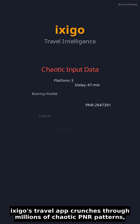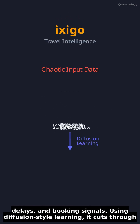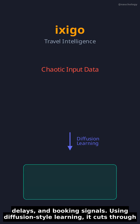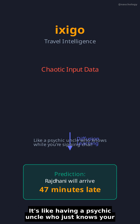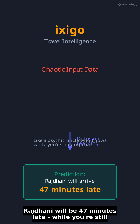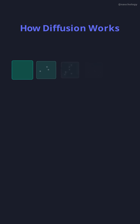Ixigo's travel app crunches through millions of chaotic PNR patterns, delays, and booking signals. Using diffusion-style learning, it cuts through the noise to predict your train status with scary accuracy. It's like having a psychic uncle who just knows your Rajdhani will be 47 minutes late while you're still sipping chai at home.